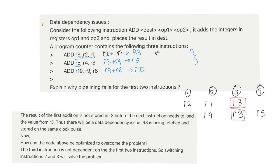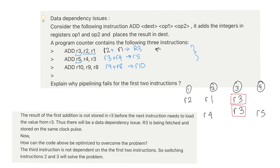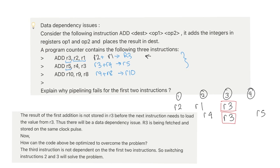It also says, how can the code above be optimized? Well, we can switch out the third instruction for the second instruction and in that case, there will be no data dependency issue. A simple fix.